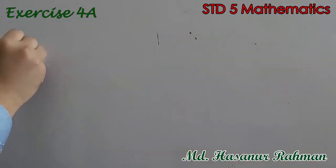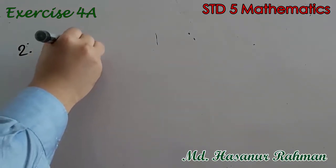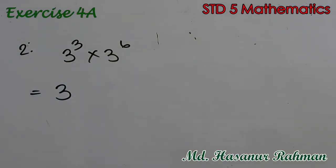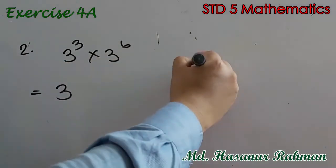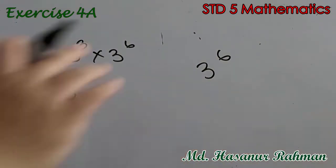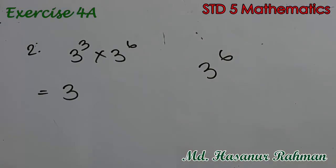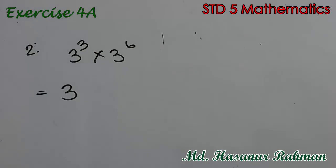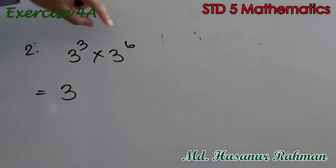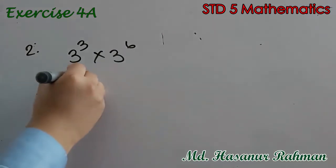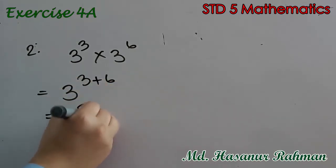Now number 2 says 3 cubed into 3 to the power 6. Both bases are the same. In 3 to the power 6, this 3 is called the base and this 6 is called the power. If you see the same base with a multiplication sign in between, you can just add the powers. That will be 3 to the power 3 plus 6, so your answer will be 3 to the power 9.